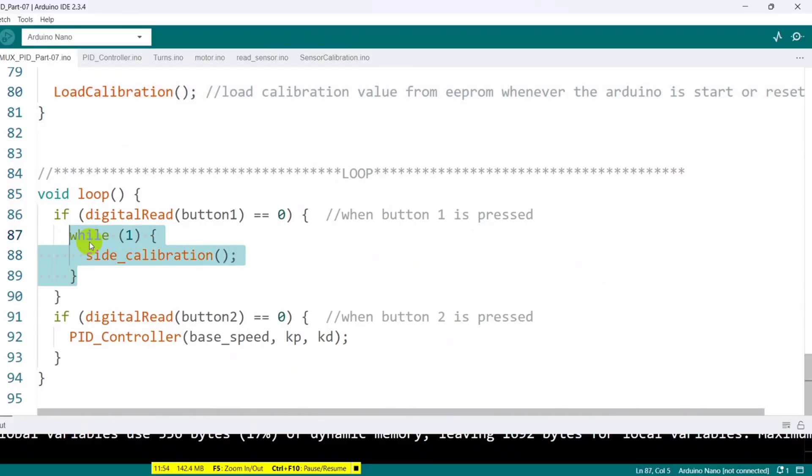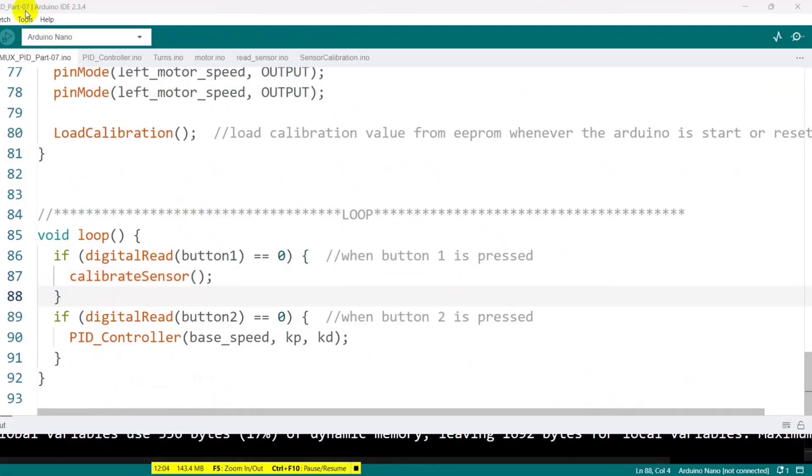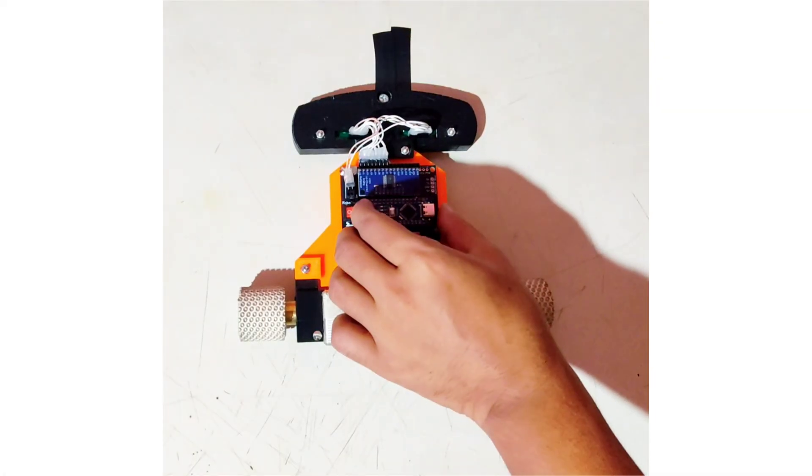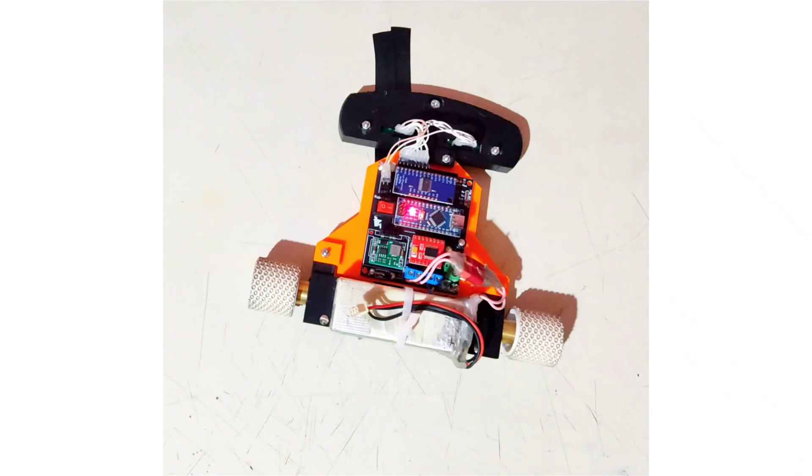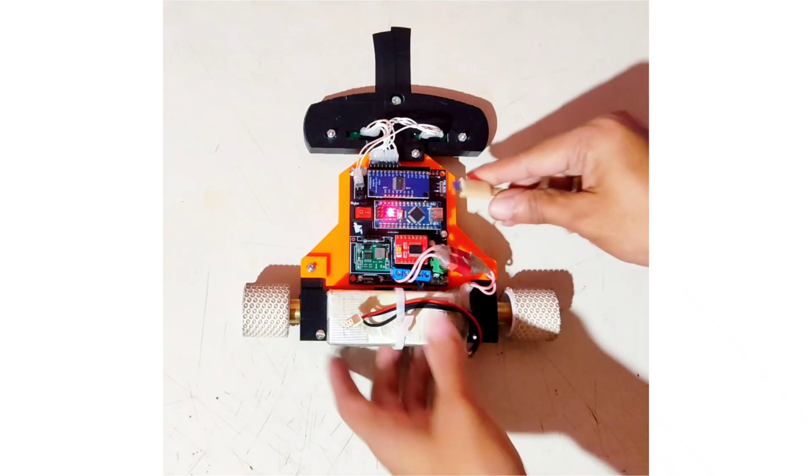Now, I simply call the calibration function when button 1 is pressed to start automatic calibration. I upload the code and test the calibration routine. When I press the button, the robot moves right and left to expose the sensors to both white and black surfaces and read their values.